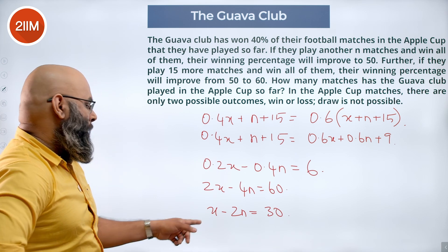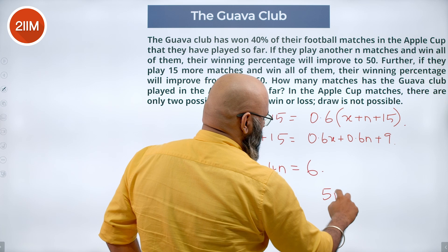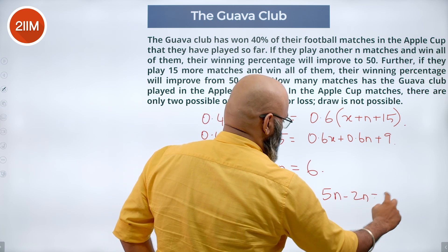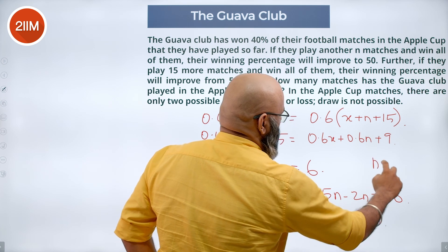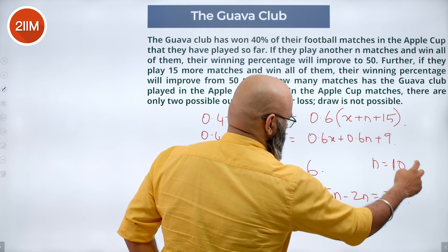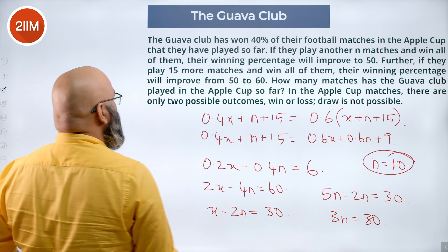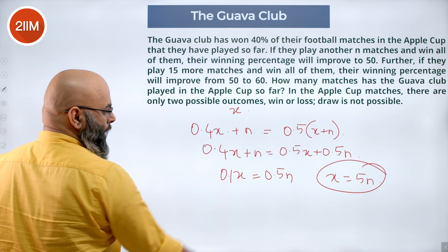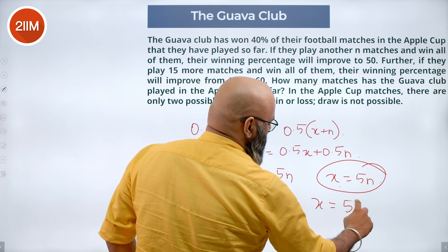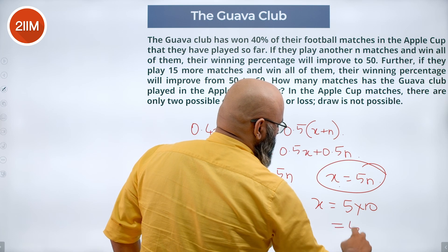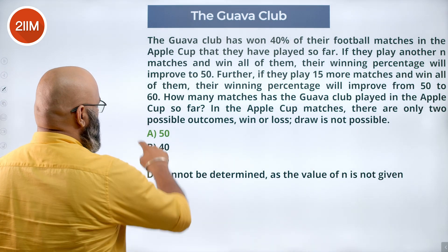We know x equals 5n, so substituting: 5n minus 2n equals 30, so 3n equals 30, giving n equals 10. Since x equals 5n, x equals 5 into 10, which is 50. So the Guava club has played a total of 50 matches so far, and the answer is 50.